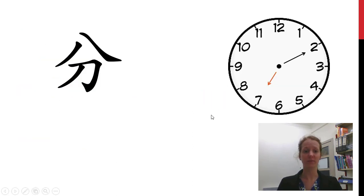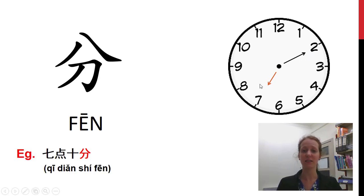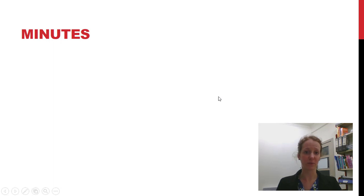這是什麼? 分. Minutes. Right now 現在, 現在七點十分. So the hour always comes first and then the minutes. Let's have a look at some examples.